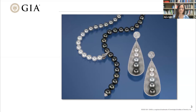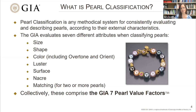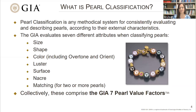Today, we'll be explaining the GIA's pearl classification system, which we apply to nacreous cultured pearls submitted to GIA laboratories worldwide. Also, at the end of today's talk, I will give a sneak peek at a new cultured pearl classification report debuting this fall. Pearl classification is any methodical system for consistently evaluating and describing pearls according to their external characteristics. The GIA evaluates seven different attributes for classifying pearls: size, shape, color — which includes overtone and orient — luster, surface, and matching. Collectively, these comprise the GIA seven pearl value factors.